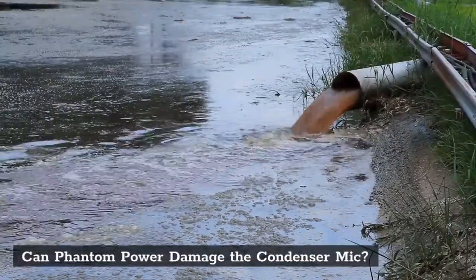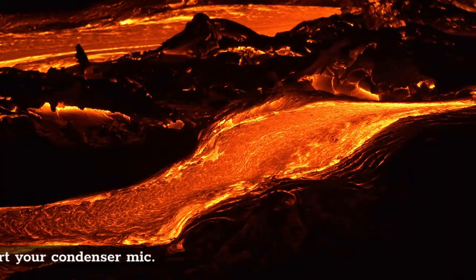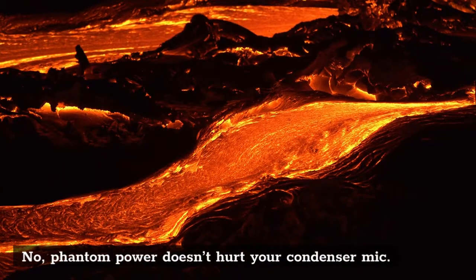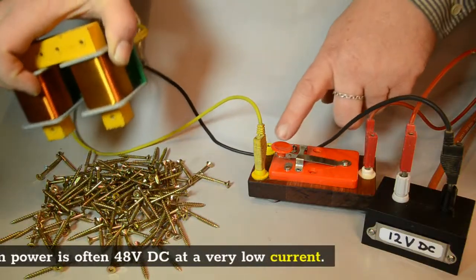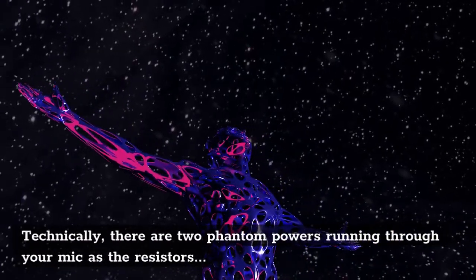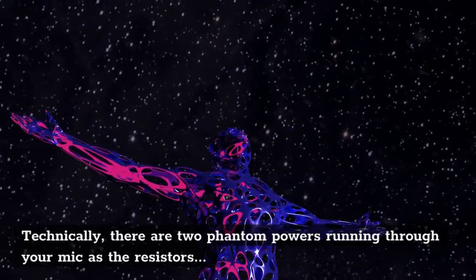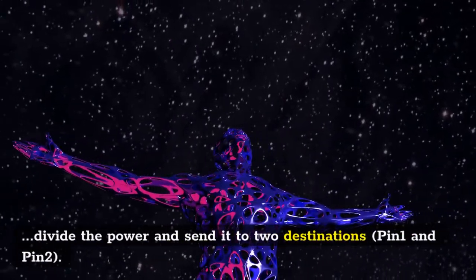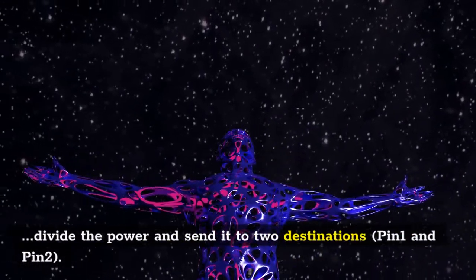Can phantom power damage the condenser mic? No, phantom power doesn't hurt your condenser mic. Phantom power is often 48 volts DC at a very low current. Technically, there are two phantom powers running through your mic as the resistors divide the power and send it to two destinations: pin one and two.